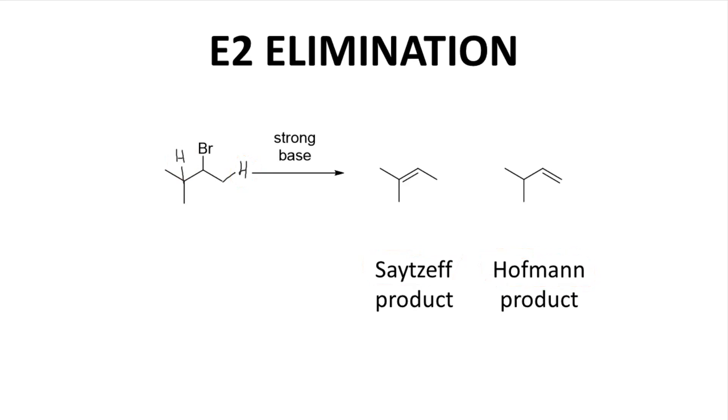As it turns out, the identity of the base allows one to control which regioisomer is formed. With typical strong bases like sodium hydroxide and alkoxides like sodium methoxide or sodium ethoxide, the Saitsev product is favored. The Saitsev product is more thermodynamically stable. And typical bases, though strong, are weaker and favor the lower energy pathway that gives the more stable product.